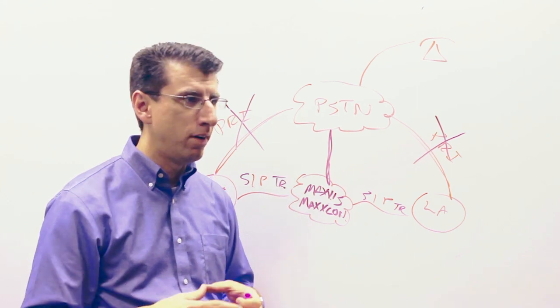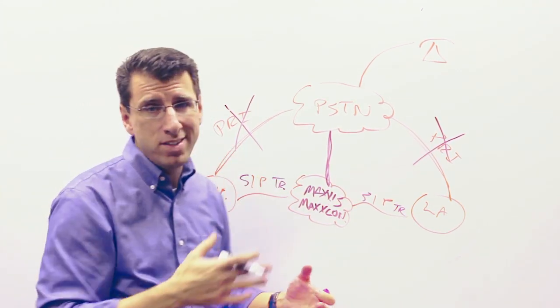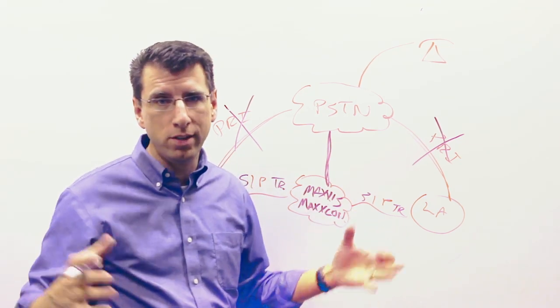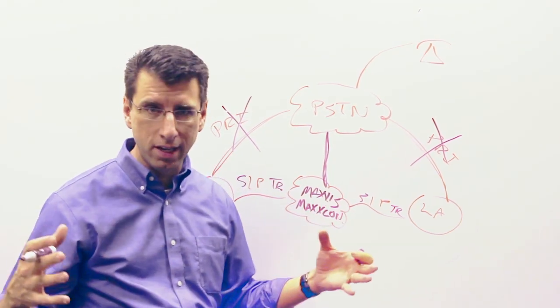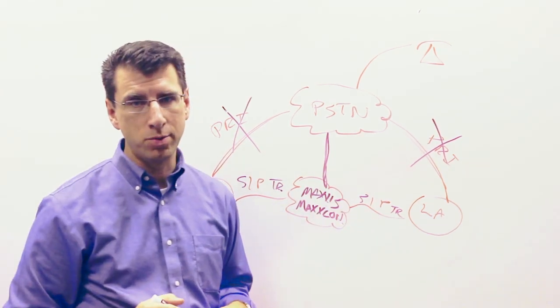So if you only need 30 simultaneous call paths, with PRIs you have to buy them in increments of 23. So you'd have to buy two of them, 46, when you really only needed 30. You can be much more efficient in how you provision the SIP trunks.